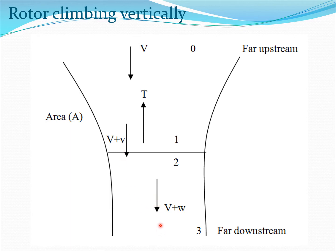Far down in the wake, the velocity is going to be capital V plus small w, where small w is the velocity in the far wake. If V is not zero — that is, the climb velocity is not zero — then small v and w are not going to be the same as in the hover condition. Whenever we refer to the hover condition, we will put a subscript h on v to differentiate between v in climb and v in hover.